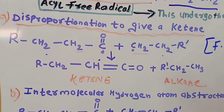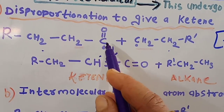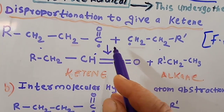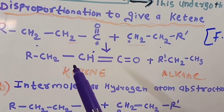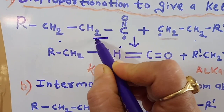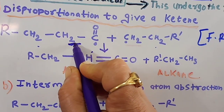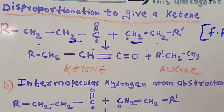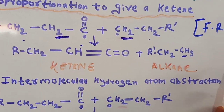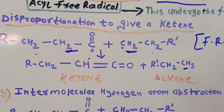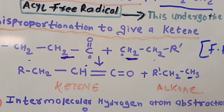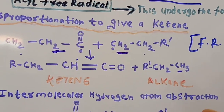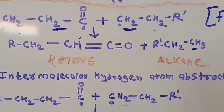In the disproportionation step, the carbonyl carbon combines with the RCH₂CH₂ fragment and one hydrogen is abstracted from the acyl free radical, transferring to the other carbon to form CH₃. The result is formation of a ketene and an alkane. So the first step — disproportionation — yields one ketene and one alkane.